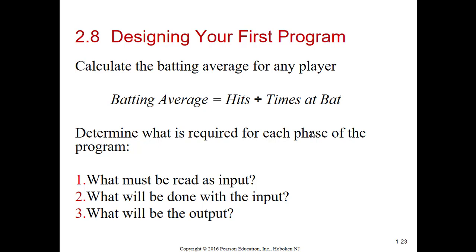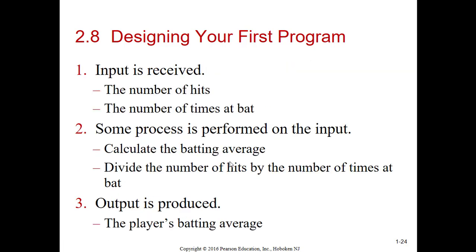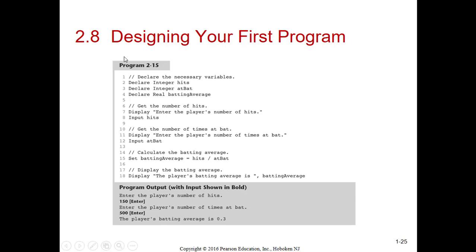That's in every program. If you compare your input to your output, what's not on your input that you need on your output, you've got to calculate it. It's that simple. The input received is the number of hits and the times at bat. What they want output is the batting average. Well, they didn't get the batting average from the input, which means it's got to be processed, and that explains it like that.